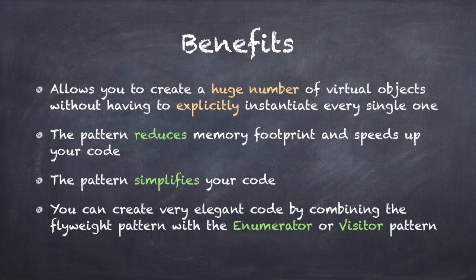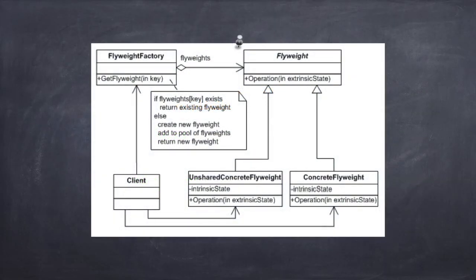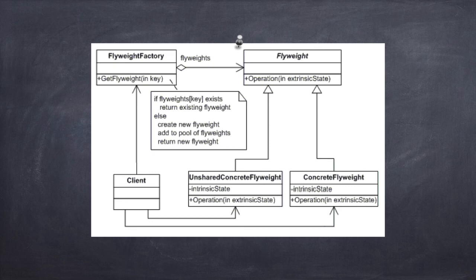Here is the UML diagram of the flyweight pattern. The pattern uses an abstract base class called Flyweight. This class has a single method called Operation, and you can see that it expects the extrinsic state as an argument. The client always has to provide the extrinsic state for each flyweight object. There are two concrete subclasses of the flyweight base class. The first one, on the right, is called ConcreteFlyweight, and this is the actual flyweight object. It implements the operation and also has a field called IntrinsicState.